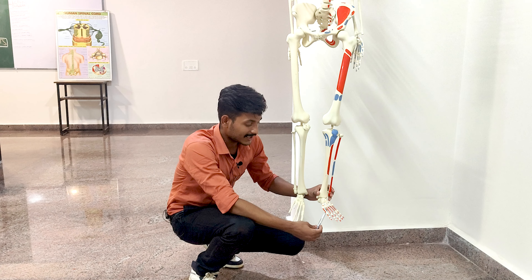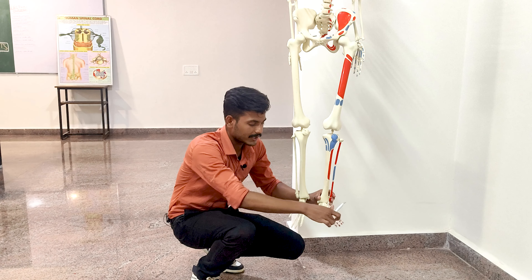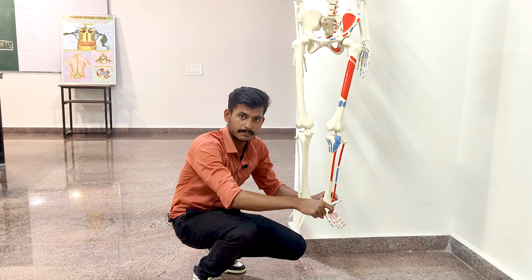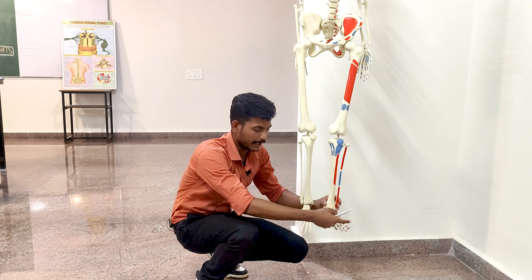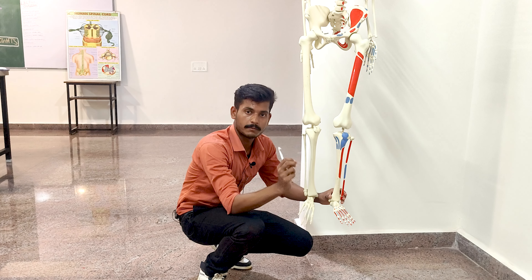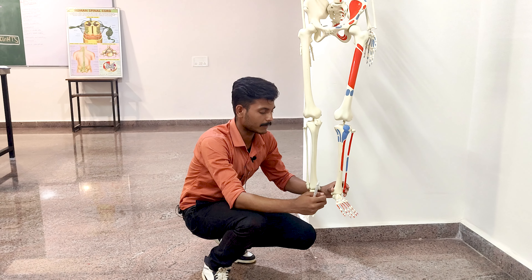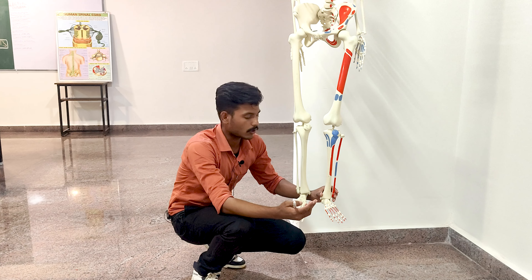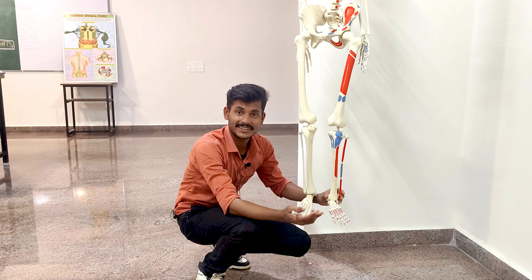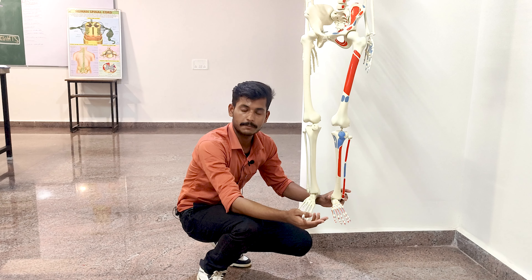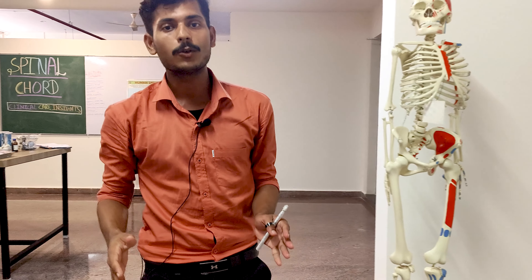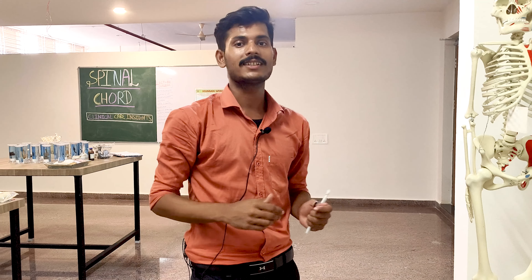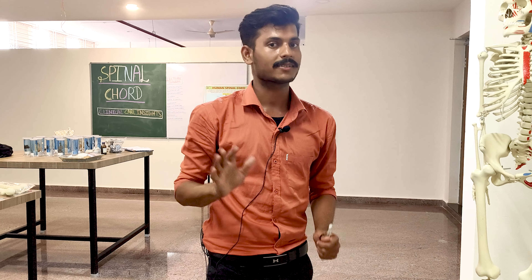In the Babinski sign, if the result is negative, the great toe bends inward. But if the great toe bends upward, it indicates certain motor neuron diseases — possibly paralysis or certain degenerative neurological disorders like multiple sclerosis. I hope you understood today's lecture on the spinal cord — its anatomy, physiology, and clinical importance. Thank you and have a nice time.